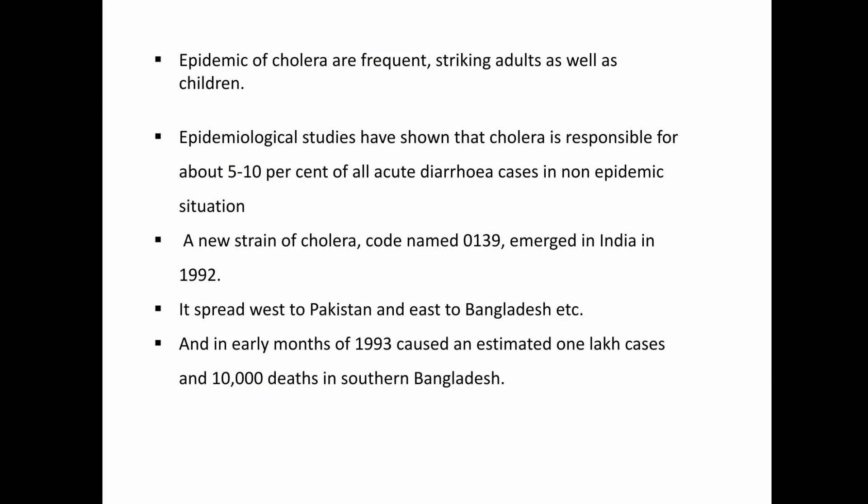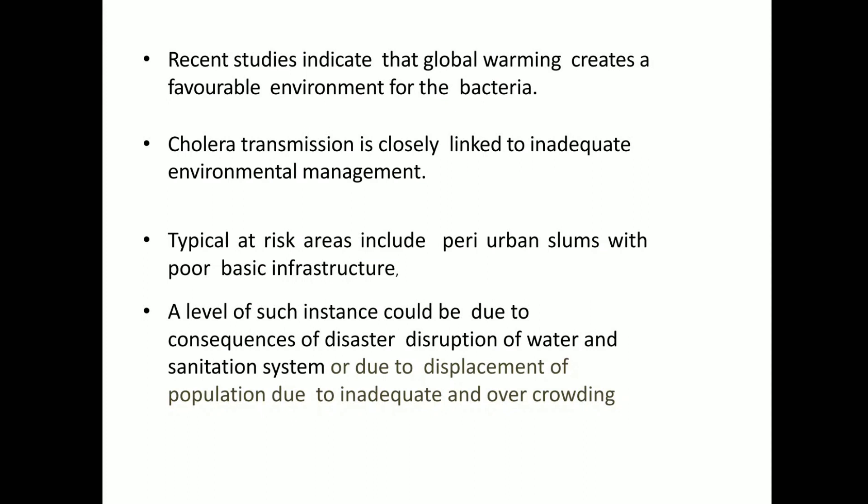A new strain of Vibrio cholerae named O139 emerged in India in 1992, and it spread to west Pakistan and east Bangladesh. In the early months of 1993, it caused more than one lakh cases and ten thousand deaths in southern Bangladesh.